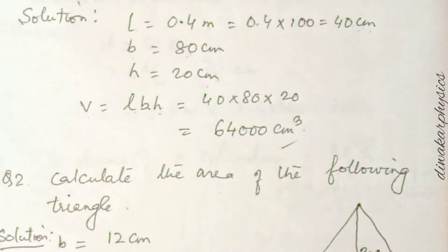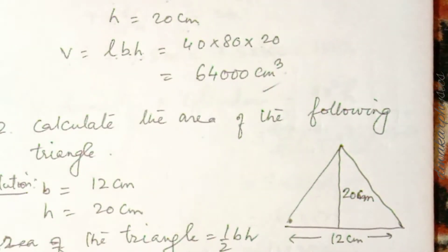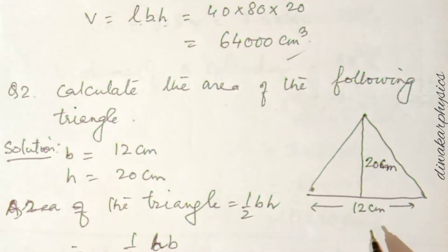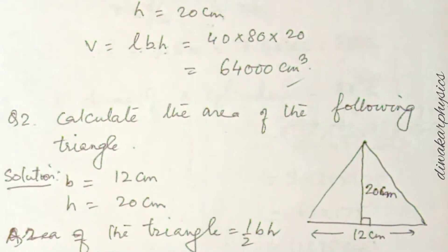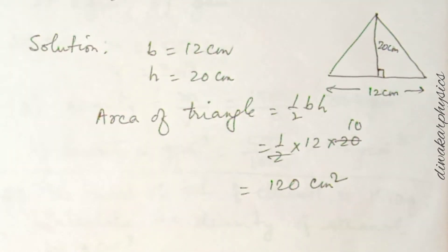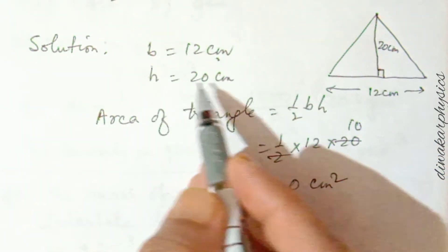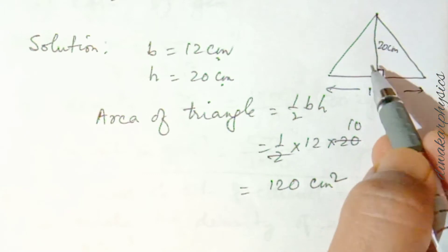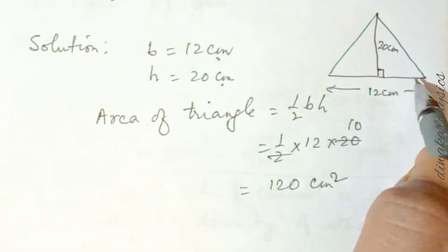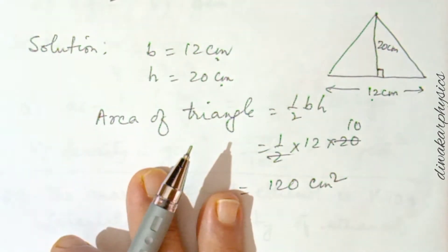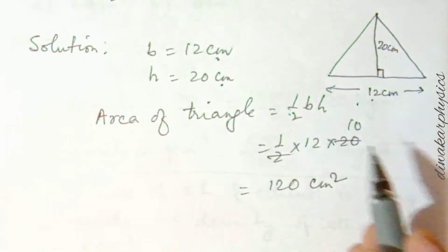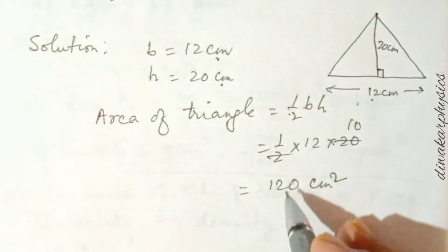Question number two: calculate the area of a triangle. The base is 12 centimeter and the height is 20 centimeter. This height is perpendicular to the base. The formula for area of a triangle is ½ × base × height. So it is ½ × 12 × 20. Both values are in centimeter, so no unit conversion is needed.